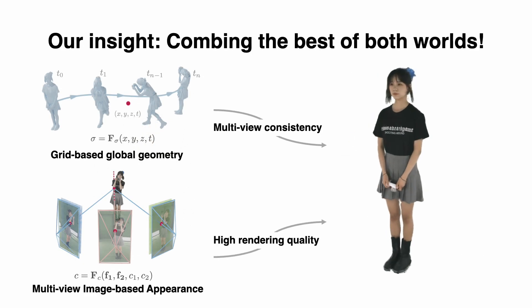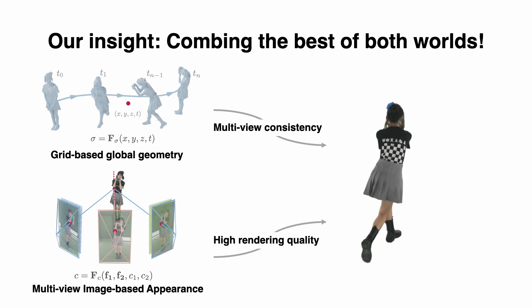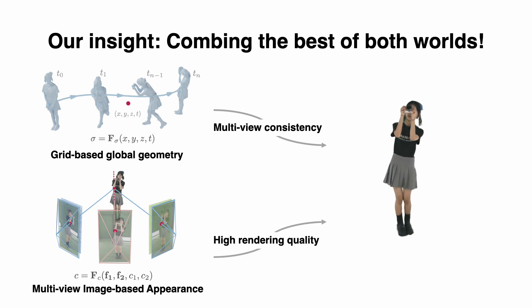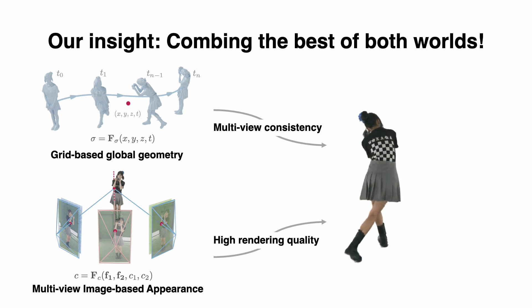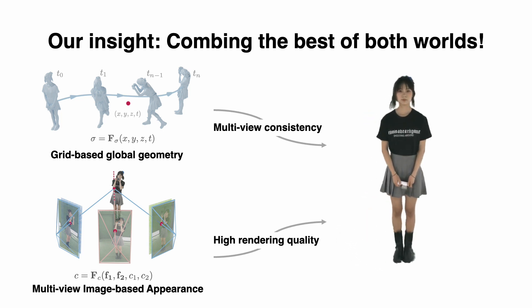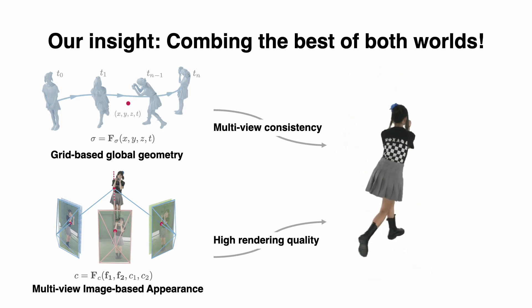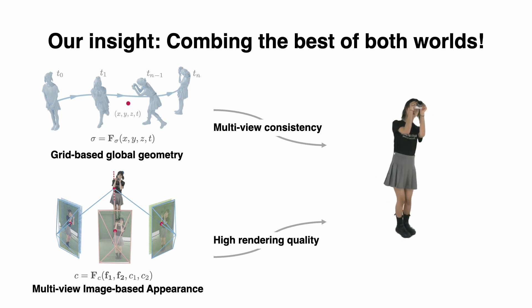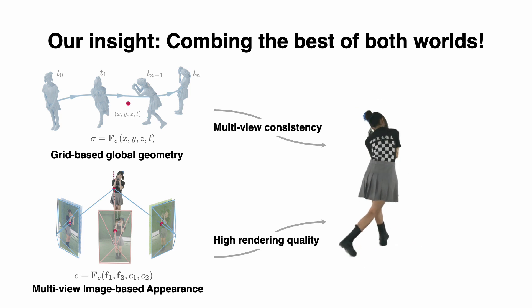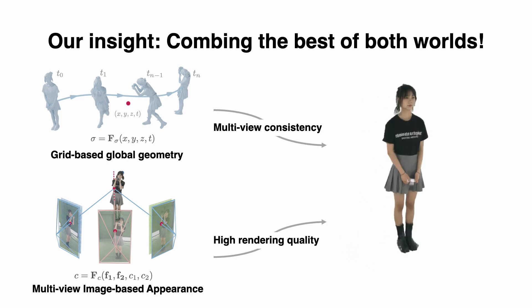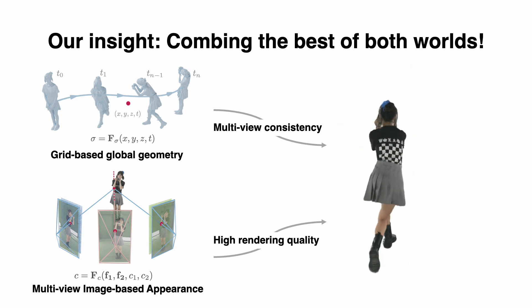As mentioned above, although previous grid-based methods offer consistent rendering, they fall short in capturing intricate appearance details of complex dynamic scenes. In this realm, multi-view image-based rendering methods exhibit opposing characteristics. To combine the strengths of both approaches, we introduce IM4D, a hybrid scene representation that includes a grid-based geometric representation and a multi-view image-based appearance representation. Here we showcase the high-fidelity rendering results achieved by our method, which delivers high-quality and multi-view consistent rendering.